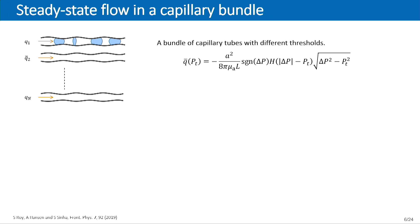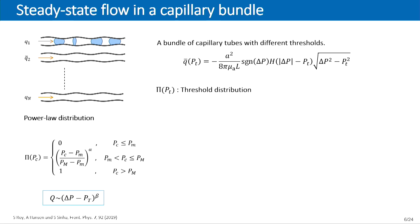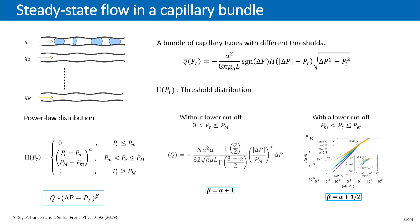We then went one step further and took a bundle of capillary tubes with a distribution of threshold pressures. Using the steady-state equation for a single tube and integrating over the distribution, we tried different distribution types. For a power-law distribution without a lower cutoff, we can solve analytically, giving the power law exponent beta equals alpha plus 1, where alpha is the exponent of the threshold distribution. With a lower cutoff, numerical results show that the distribution directly controls the power-law exponent. For alpha equals 1, corresponding to a uniform distribution, beta equals 2.